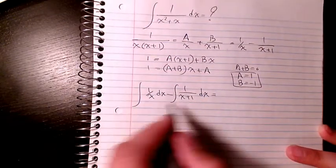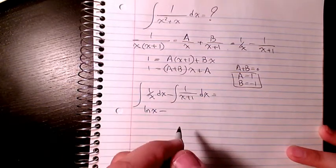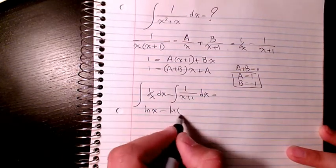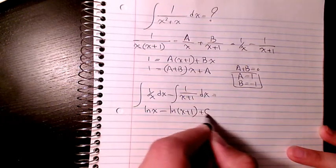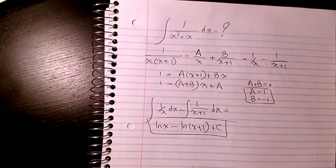So now it's very simple. Integration of 1 over x is ln x. Integration of 1 over (x plus 1) is ln(x plus 1), plus a constant. So that is the final answer to this question using partial fraction decomposition.